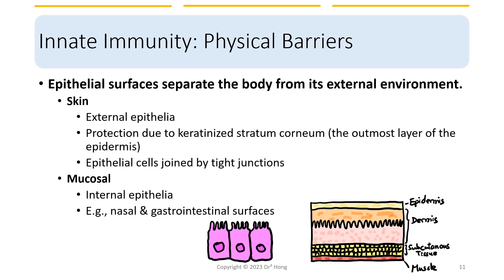In terms of physical barriers, the most obvious would be the epithelial surface that separates the body from its external environment — our skin, which we can call external epithelia. The protection is due to keratinized stratum corneum, which is the outermost layer of dead skin. The epithelial cells underneath the dead skin are tightly joined to prevent invasion of microorganisms. Other than skin, another type of epithelial surface is internal epithelia, meaning the mucosal lining of our nasal passages and gastrointestinal surfaces.